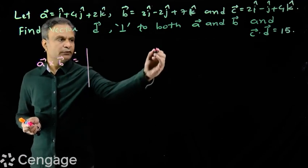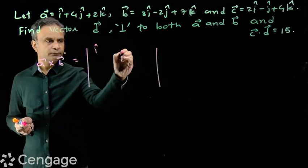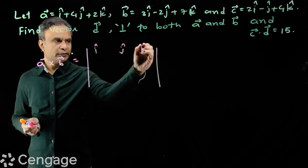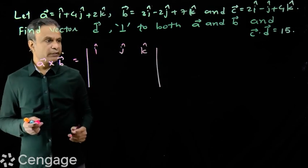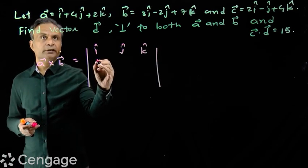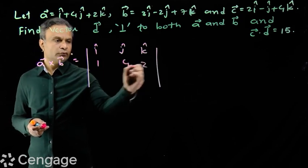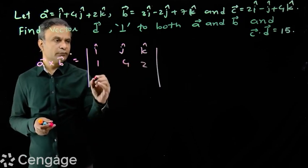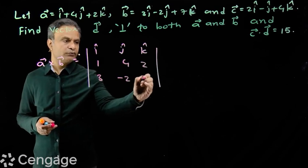This will be, we have this vector. In the first row, we write vectors i, j, k. And then in the second row, we write coefficients of vector a: 1, 4, 2. And then we write coefficients of vector b: 3, minus 2, 7.